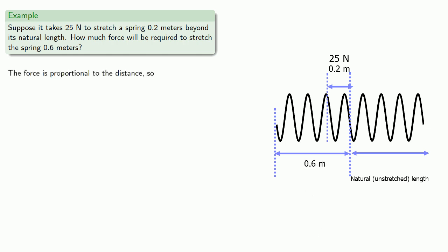If force is proportional to the distance, so the force is to 25 newtons as the distance, 0.6 meters, is to 0.2 meters. And note, we're including the units so we can determine the units of our final answer. Treating our units like algebraic variables and solving for F, we get 75 newtons.